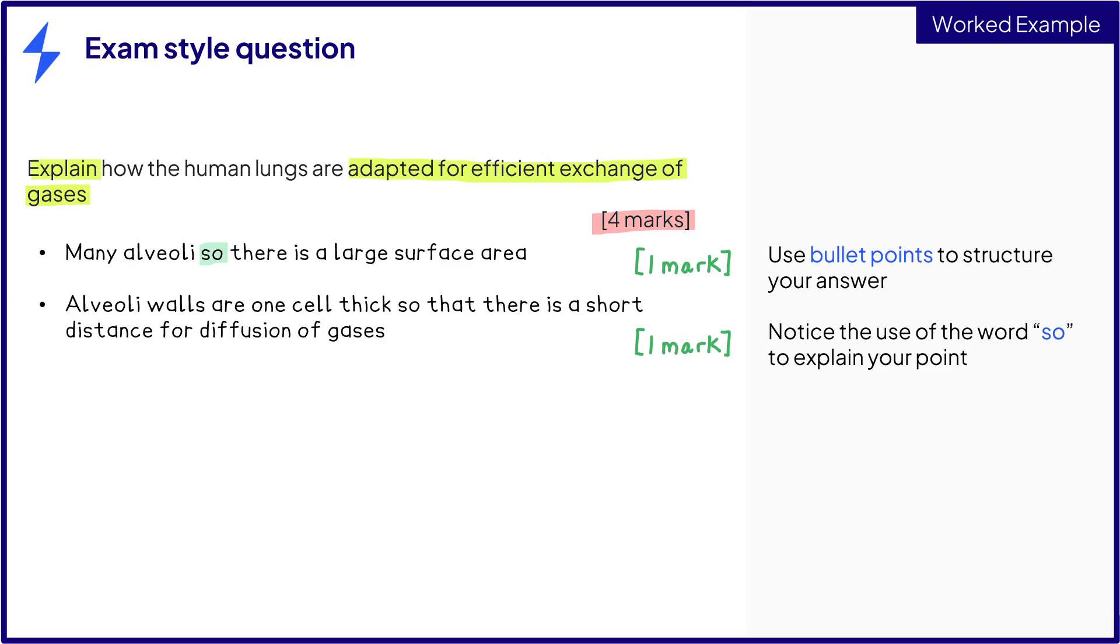You would get the same marking point if you described the capillary wall instead of the alveoli. We can now write about good ventilation as a third marking point. Let's explain this. Good ventilation maintains a diffusion concentration gradient.